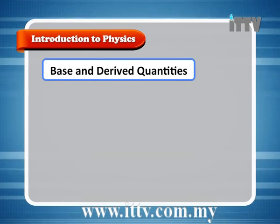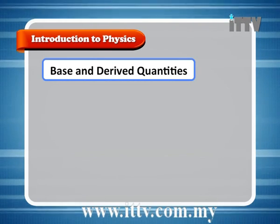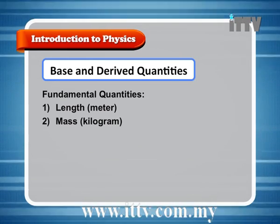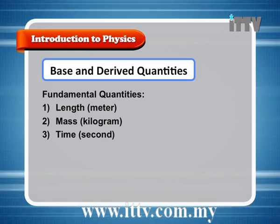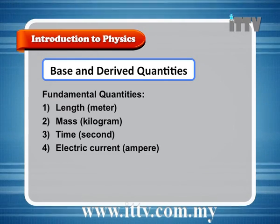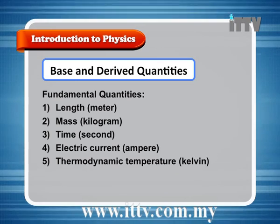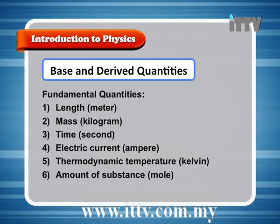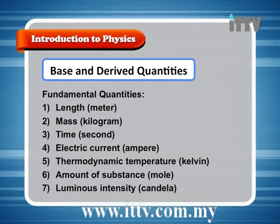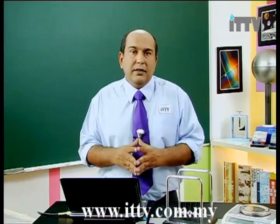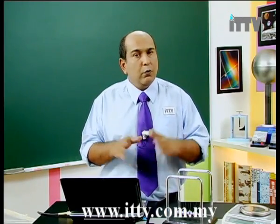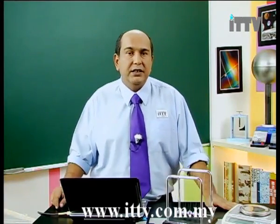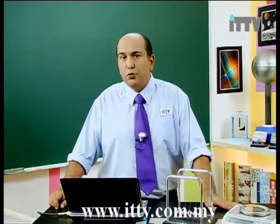Base and derived quantities. The seven base quantities are: length (metre), mass (kilogram), time (second), electric current (ampere), thermodynamic temperature (kelvin), amount of substance (mole), and luminous intensity (candela). The amount of substance — mole — is used mainly in chemistry. For examination purposes, you must know the first five base units: length, mass, time, electric current, and temperature.